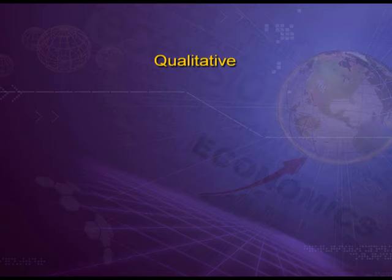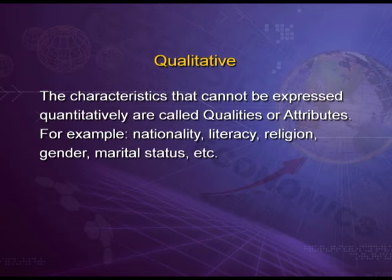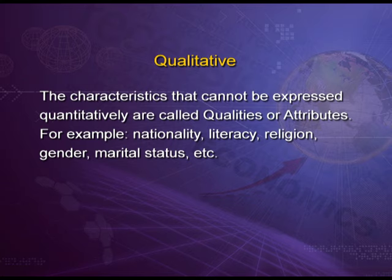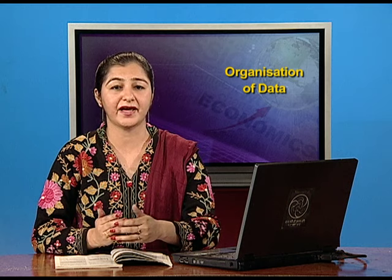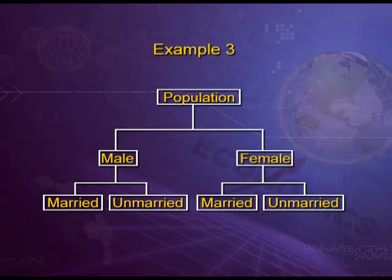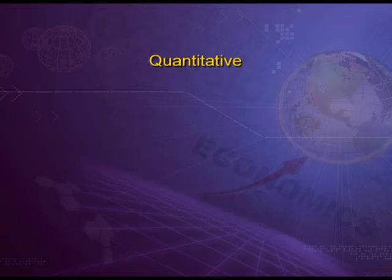The next type is qualitative classification. Sometimes we come across characteristics that cannot be expressed quantitatively — these are known as qualities or attributes. For example, nationality, literacy, religion, gender, and marital status cannot be measured, yet these attributes can be classified on the basis of the presence or absence of a qualitative characteristic. This is known as qualitative classification. It can be illustrated with a flowchart: population divided into male and female, which can be further divided into married and unmarried.